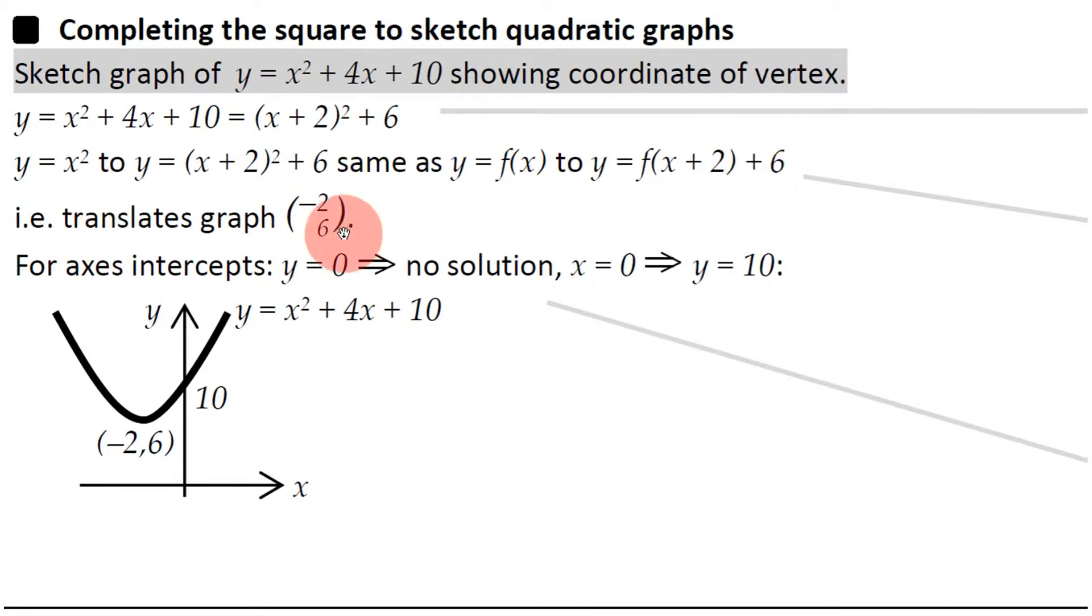So basically, it means this translation (-2, 6). So from here to there, from y equals x squared to our graph, it means a translation of (-2, 6). So that means the vertex goes from (0, 0), which is what you have in y equals x squared, to this, (-2, 6).